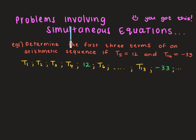That's why we need to do this simultaneous equations approach. Let's get stuck in. I'm going to remind you: term 1 is A, term 2 is A plus 1 constant difference, term 3 is A plus 2 constant differences, term 4 is A plus 3 constant differences.